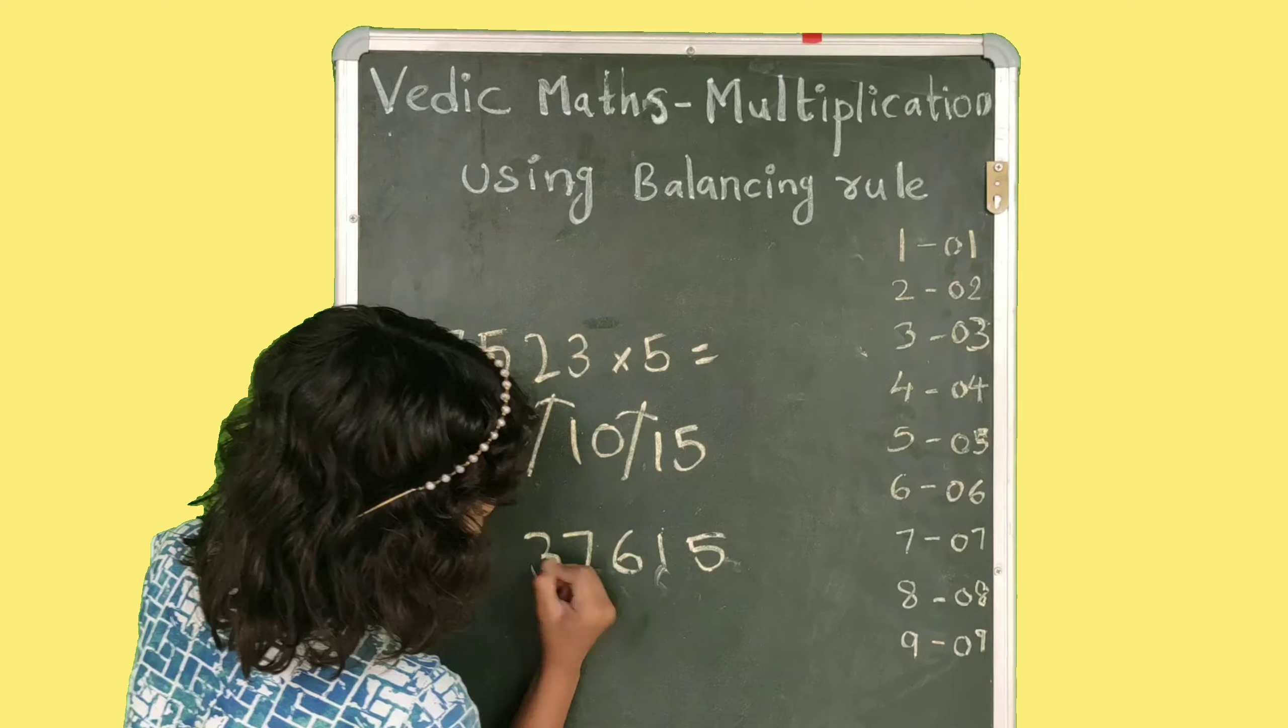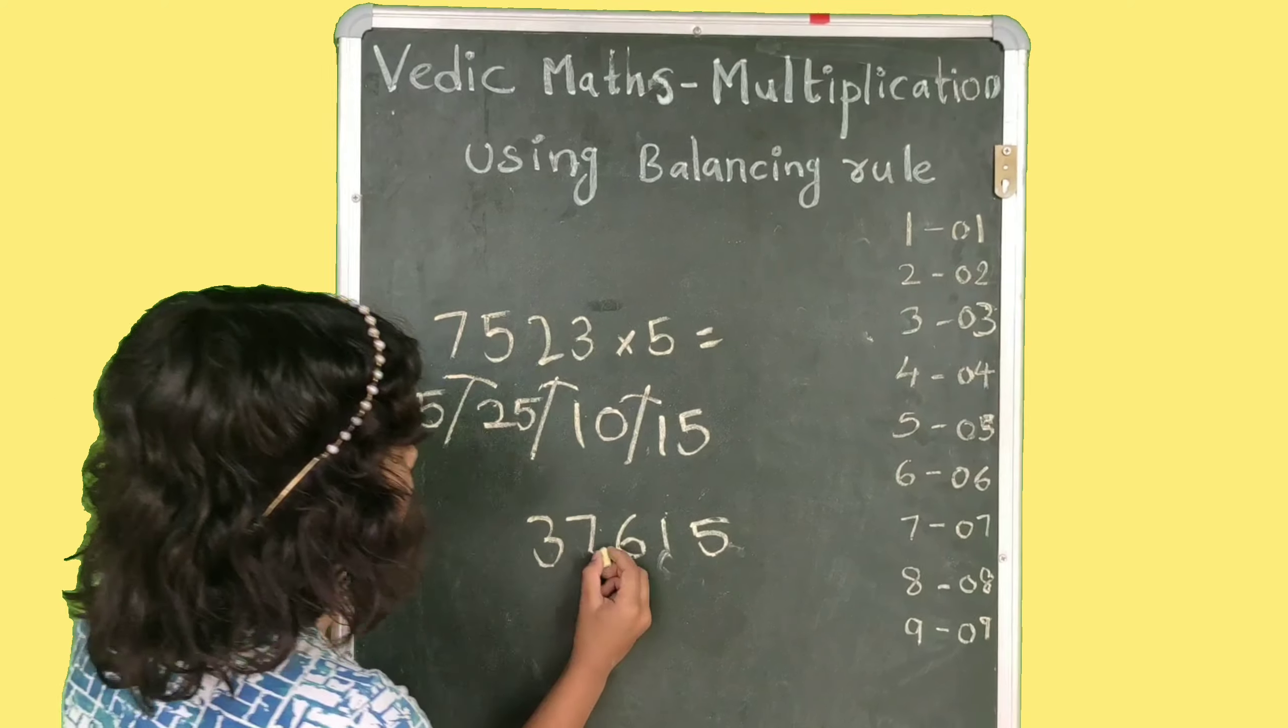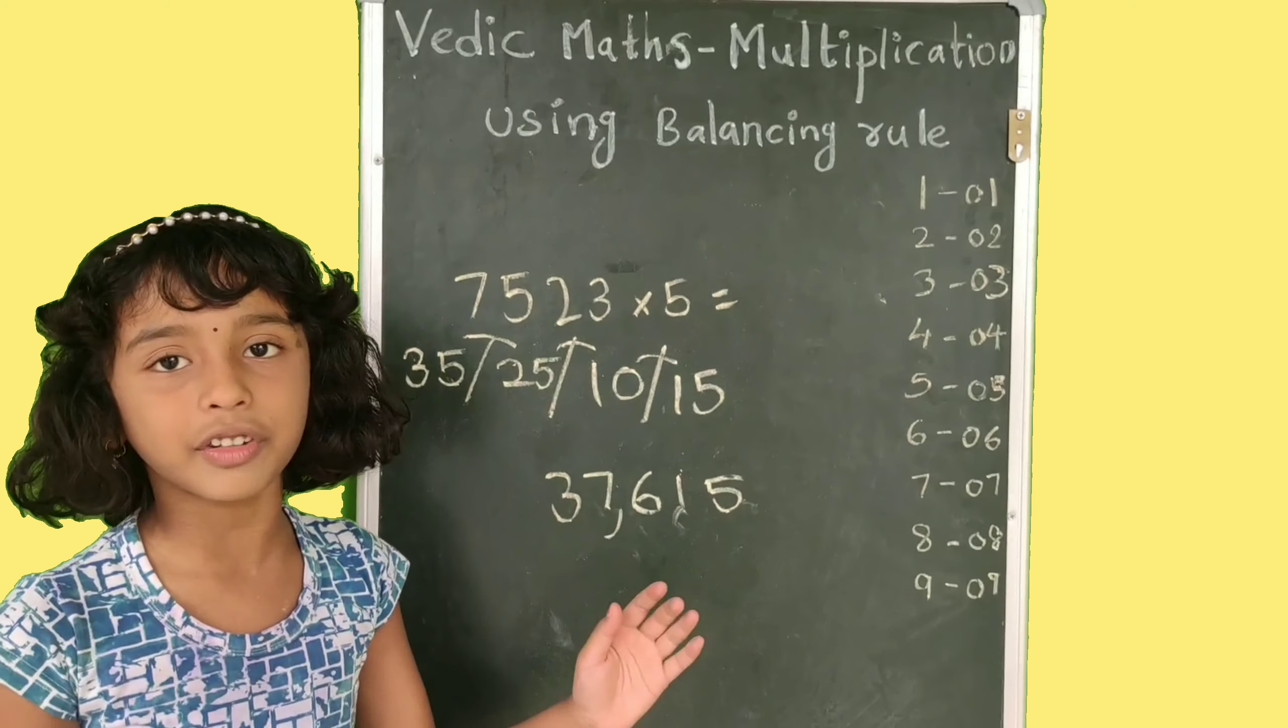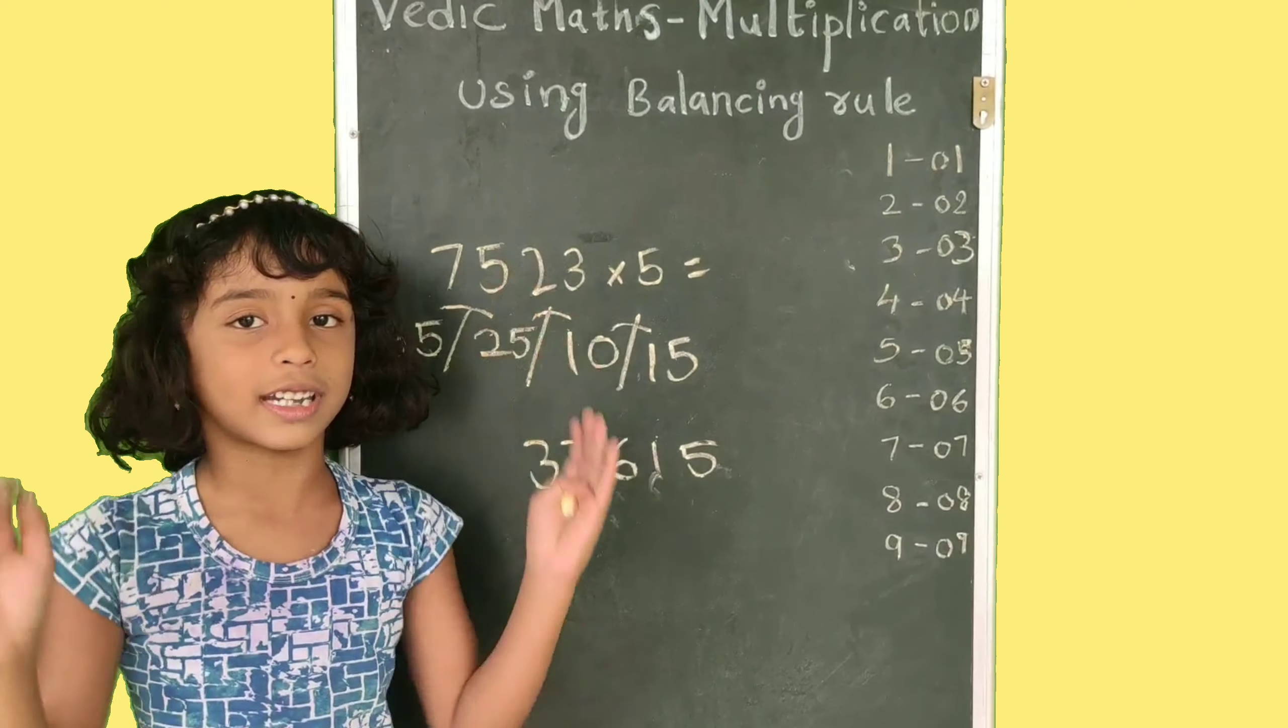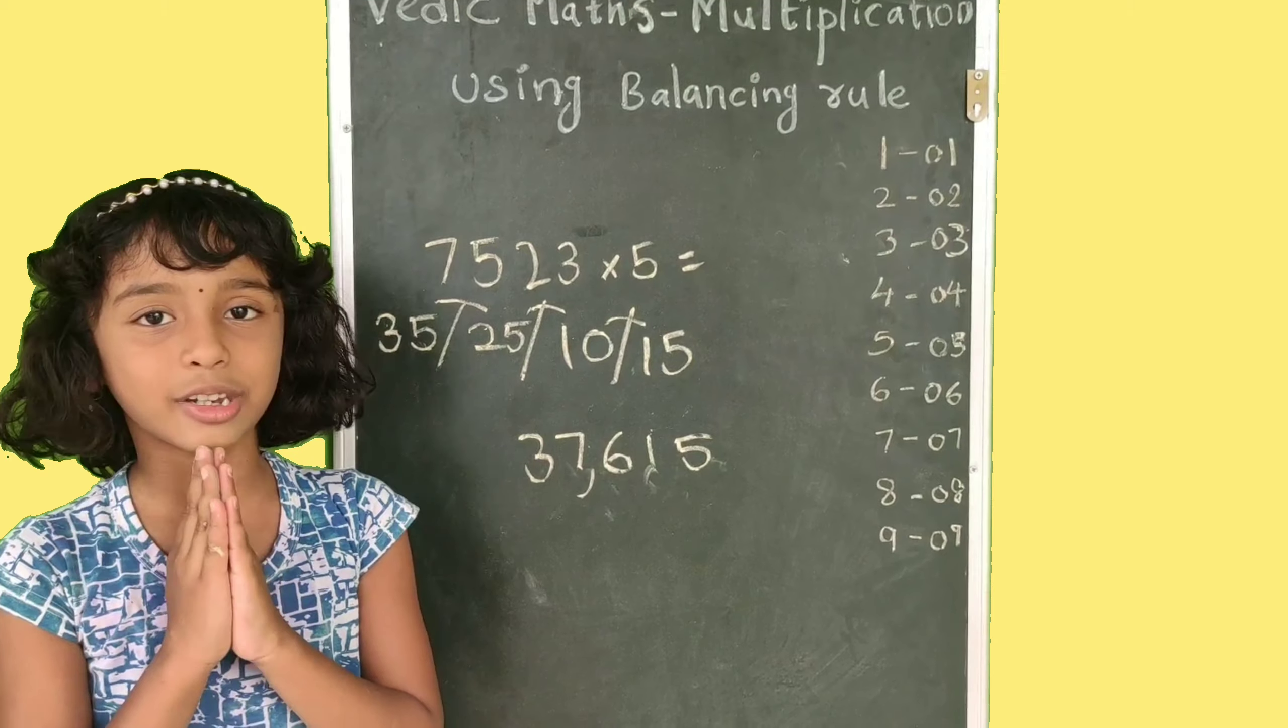E33 aalake bese kundhaan. So the answer is 37615. Thank you to all. Please subscribe my channel for more educational videos. Thank you.